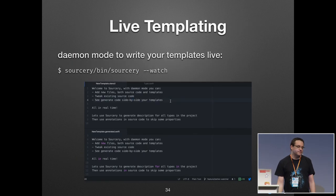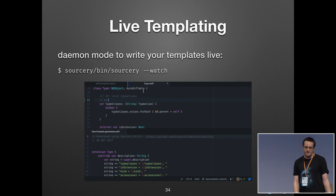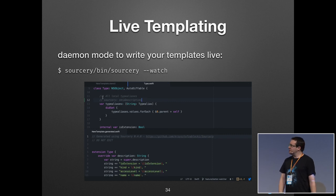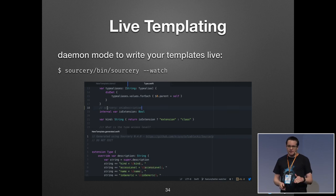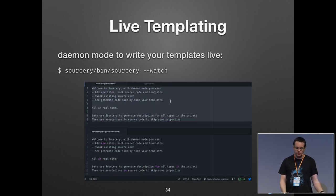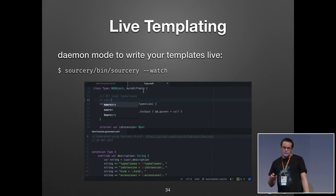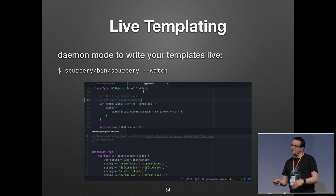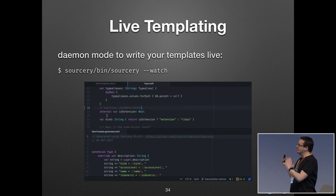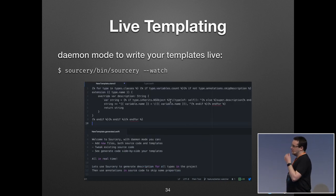Sorcery has this cool feature called daemon mode — when you're writing your own template, you'll definitely want to use it. You invoke Sorcery from the terminal with the --watch flag. Instead of parsing your code, generating the output, and returning to the prompt, it keeps running and watching your template. Every time you save your template it live-regenerates the output. So you can have your template and your generated code side-by-side in your favorite editor and see live what you'll get.